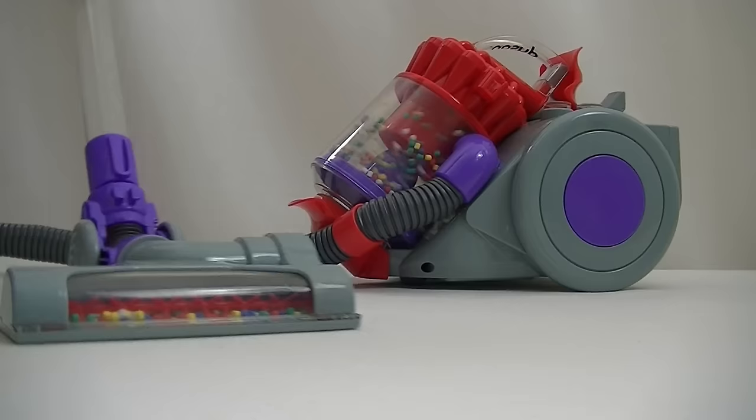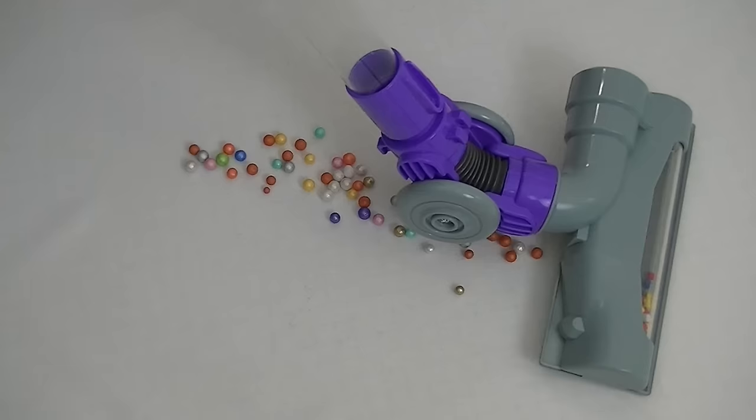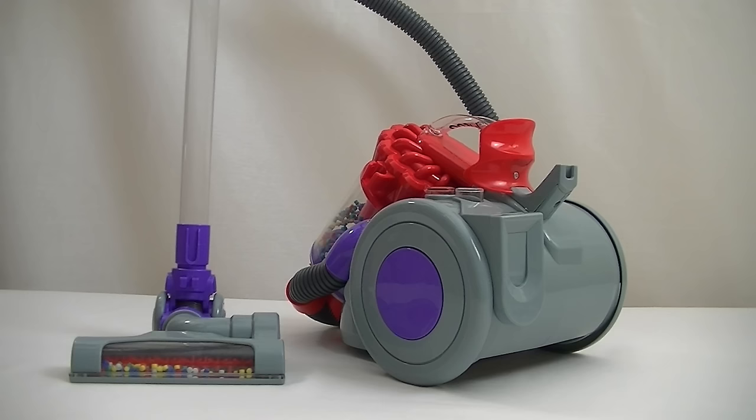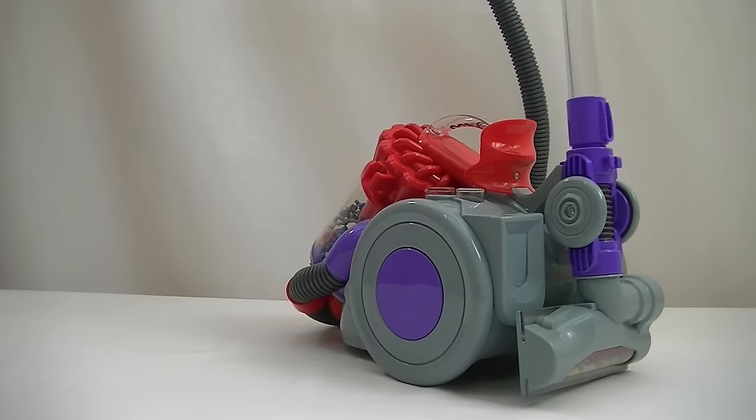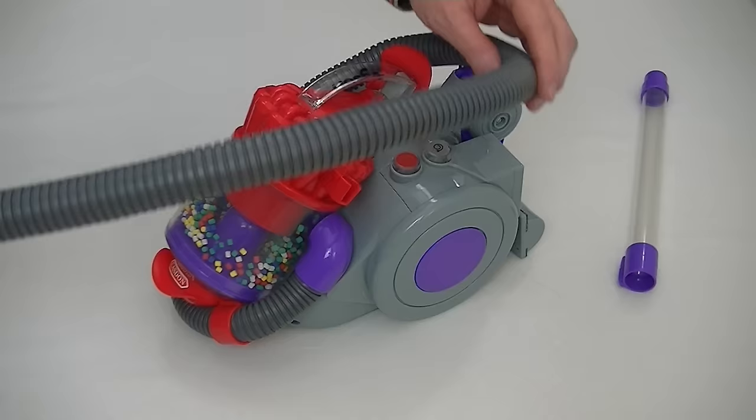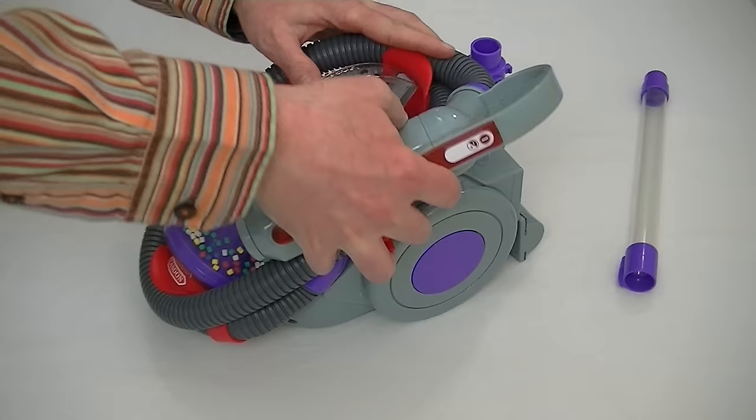So you can use the toy Dyson like this with the simulated cyclonic action, or you can use it like this with the real suction. Just like a real Dyson, this even has a parking bracket at the back, so you can store the hose and wand on the machine neatly. And when you've finished playing with your toy Dyson, you can wrap the hose around the body of the machine, just like the real Dyson stowaway.